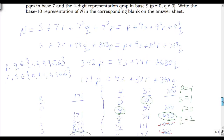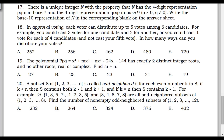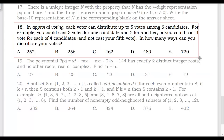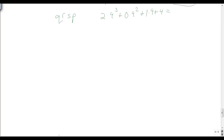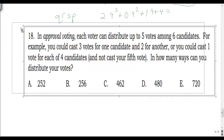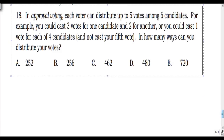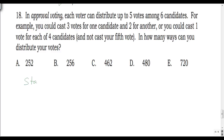On to question 18. In approval voting, each voter can distribute up to 5 votes among 6 candidates. For example, you could cast 3 votes for one candidate and 2 for another, or 1 vote each for 4 candidates and not cast your 5th vote. In how many ways can you distribute your votes? This is a classic combinatorics problem known as stars and bars.